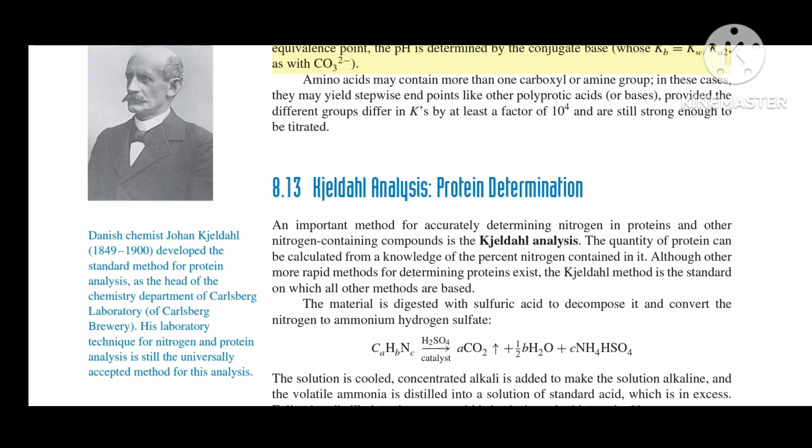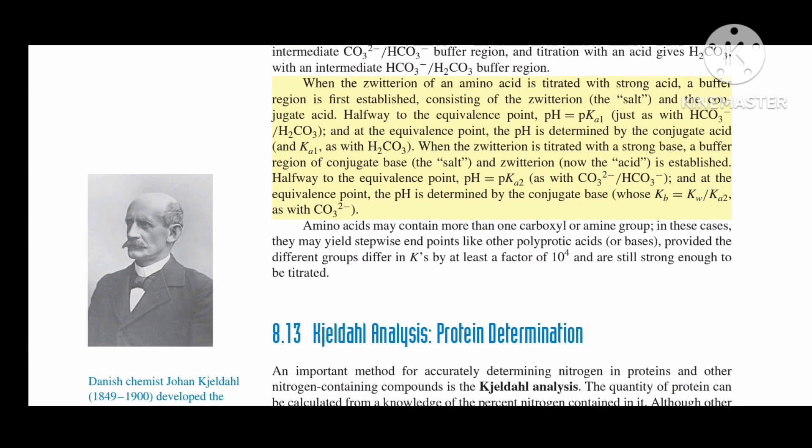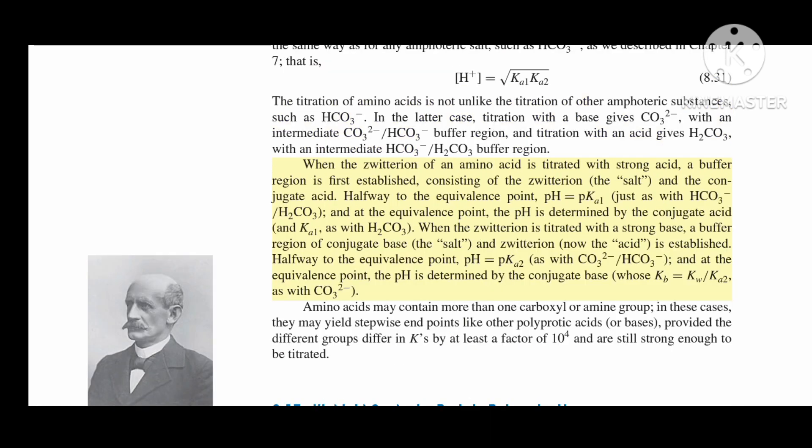When the zwitterion of an amino acid is titrated with strong acid, a buffer region is first established consisting of the zwitterion (the salt) and the conjugate acid. Halfway to the equivalence point, pH equals pKa1, just as with HCO3-/H2CO3. At the equivalence point, the pH is determined by the conjugate acid and Ka1, as with H2CO3.